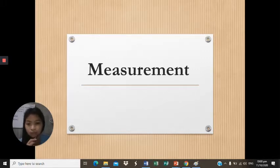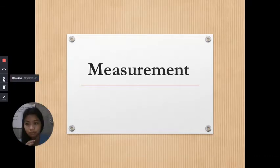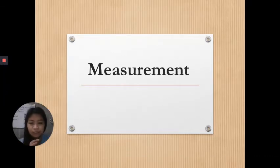In the lecture, we already have significant figures, which are the number of digits in a value, often a measurement, that contribute to the degree of accuracy of the value. It focuses more on accuracy. We also have scientific notation, which is a way of expressing a number in exponential form. This expression is helpful in reporting a very large or a very small number.